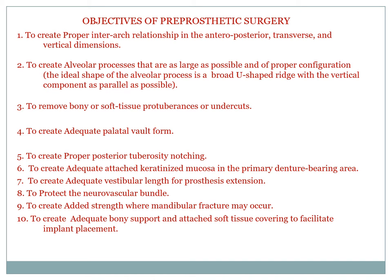The main objectives of pre-prosthetic surgery: to create proper inter-arch relationship in the anteroposterior or transverse dimension; to create a ridge as large as possible with proper configuration; to remove bony and soft tissue protuberances or undercuts; to create adequate palatal wall form; to create proper positioning of tuberosity notching; adequate attached mucosa in the primary denture-bearing area; to create adequate vestibular length; to protect neurovascular bundles; to create adequate strength where mandibular fracture may occur; and to create adequate bone support and attached soft tissue to facilitate implant placement.